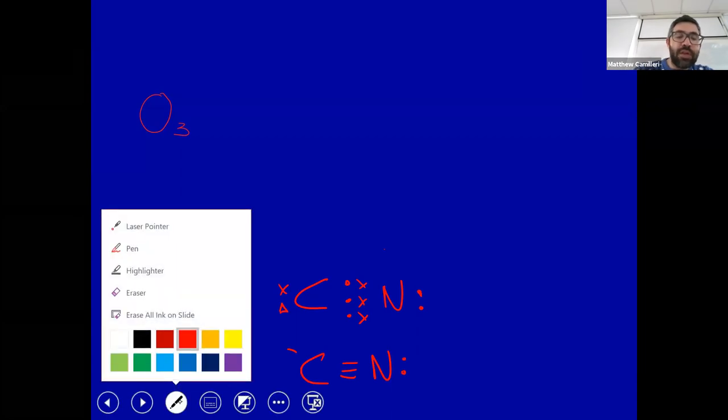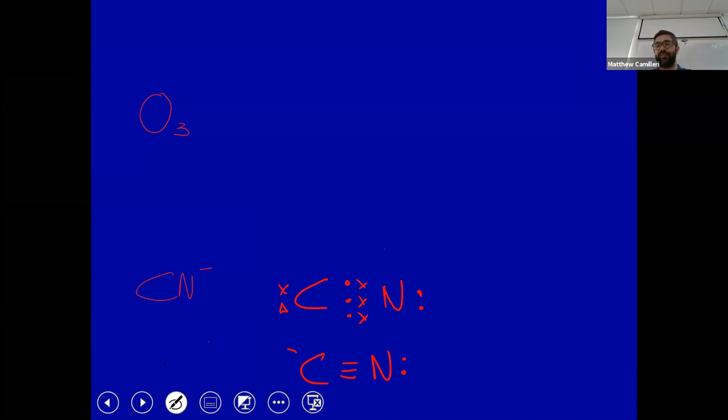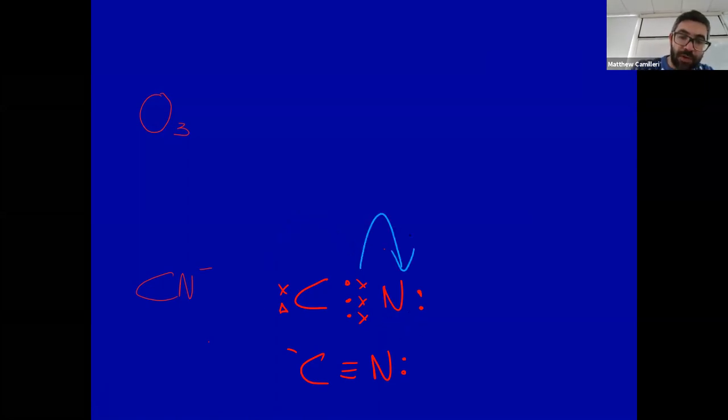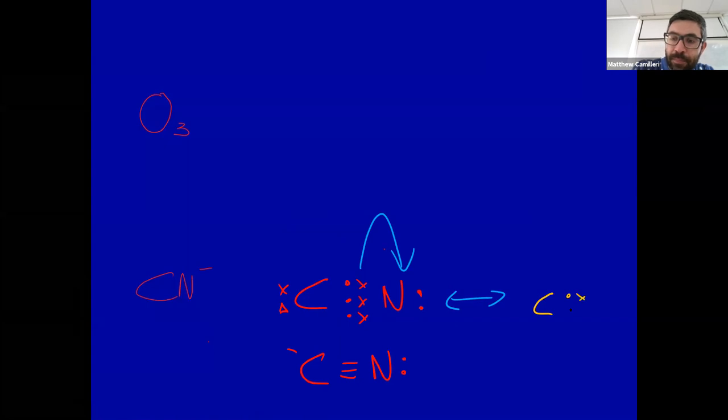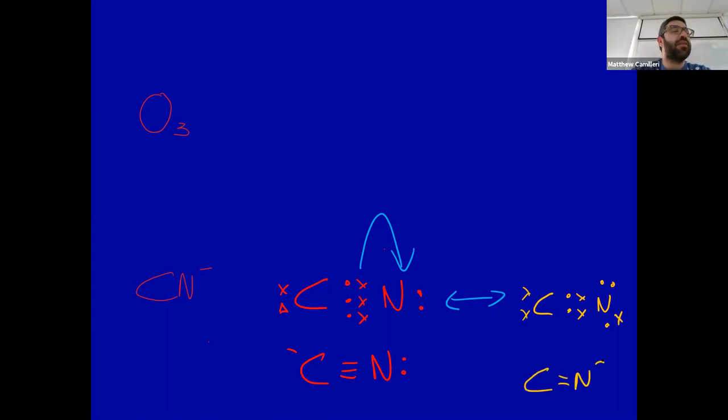Now of course we need to make sure that you can have something else. Normally to remove the charge, you would need to move the bond. So that goes there, and that goes there. Or eventually that would be just one bond there. In this situation you will have C double bond N with a negative charge on the nitrogen.